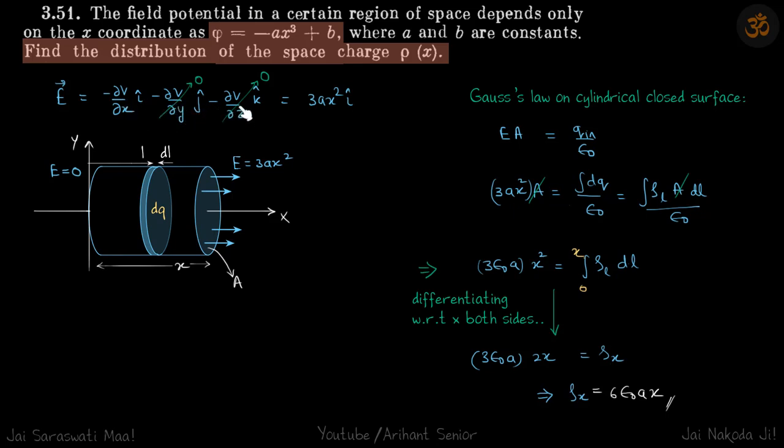As we can see, V is only a function of x and nothing else. With respect to y and z the potential is constant, so these terms become zero.